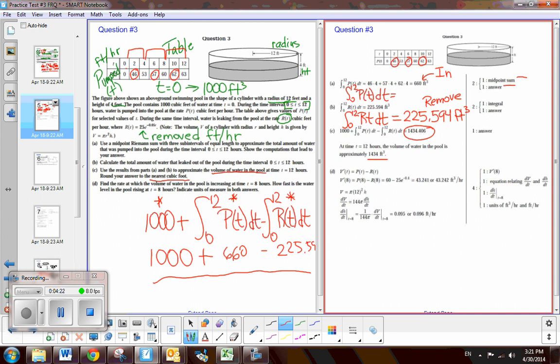The last part says find the rate at which the volume of water of the pool is increasing at T equals 8. So let's do that first. The rate at which it's increasing. So we need to find the velocity of the rate. Well, we look at the rate at which it's coming in, and then take away the rate at which it's leaving. And so we're going to use 8. So you can see here the work. So P of 8 minus R of 8. You're going to use 60 from the table. Then you're going to substitute the function into the rate function there. And then you get the answer as 43.241. Now, that's rate, so it's feet cubed per hour. So that's worth one point right there.